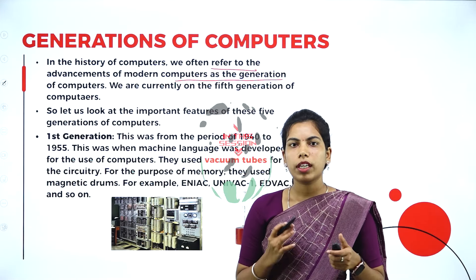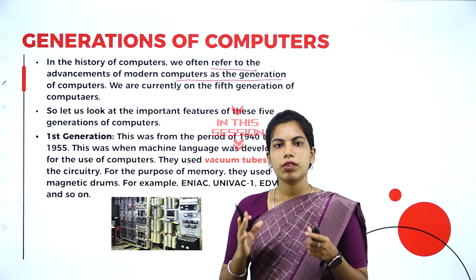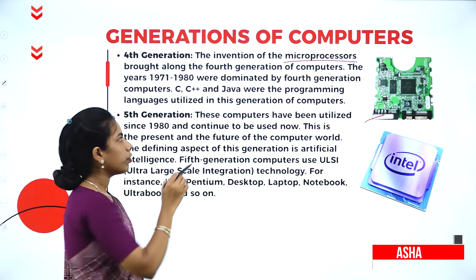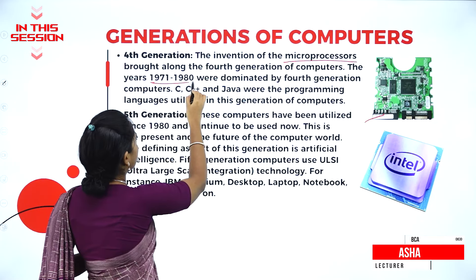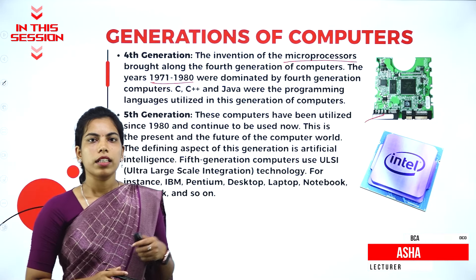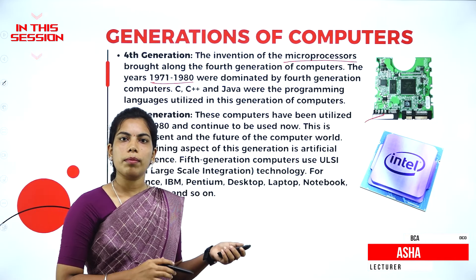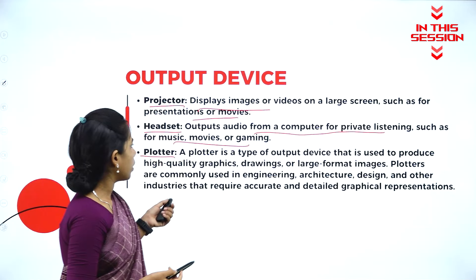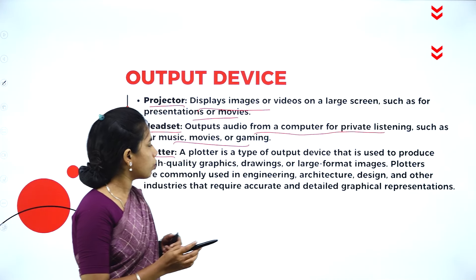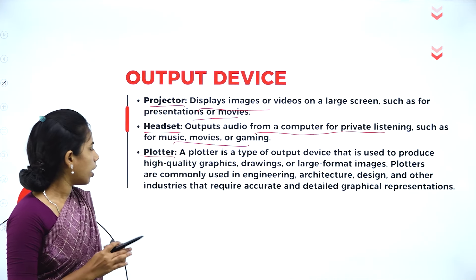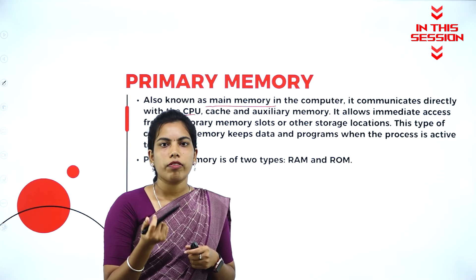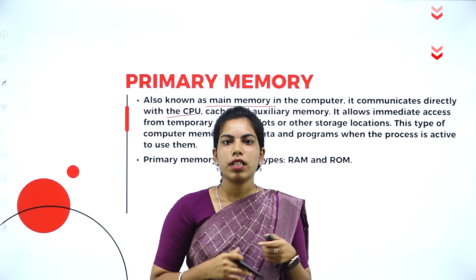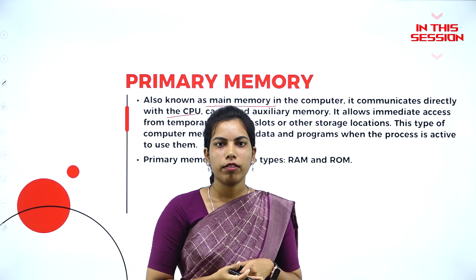Generation by generation, how the computer will look like in a modern way. In the year 1971 to 1980, they introduced the microprocessor for the computer. A plotter is a type of output device used to produce high quality graphics. When I fetch the data from the primary memory, the processing speed will be fast.